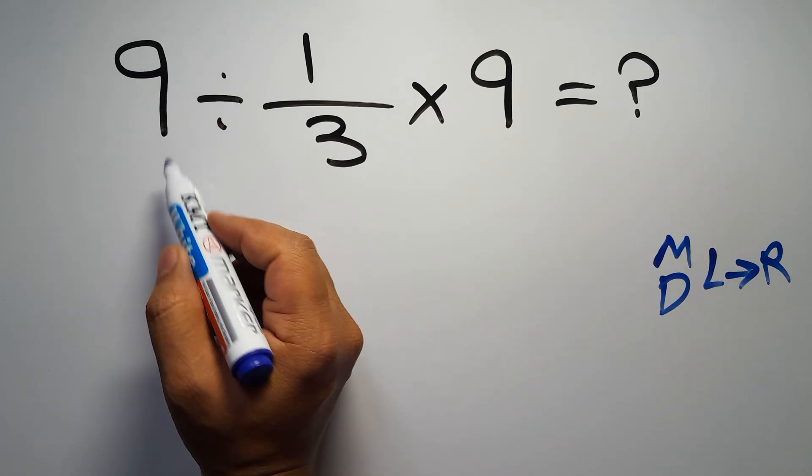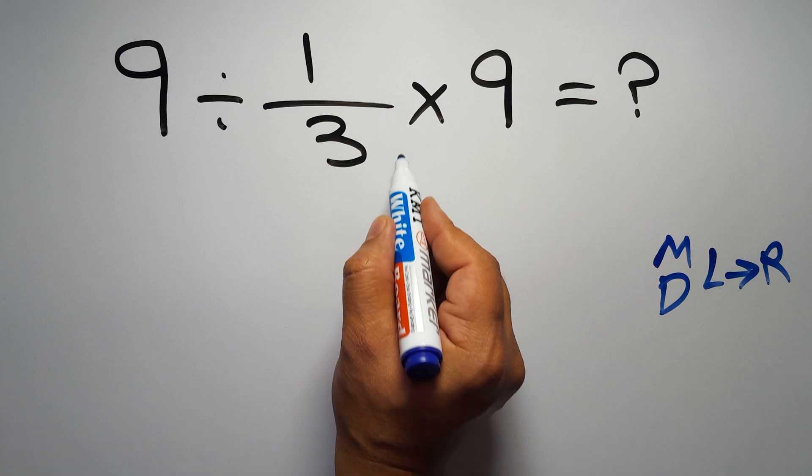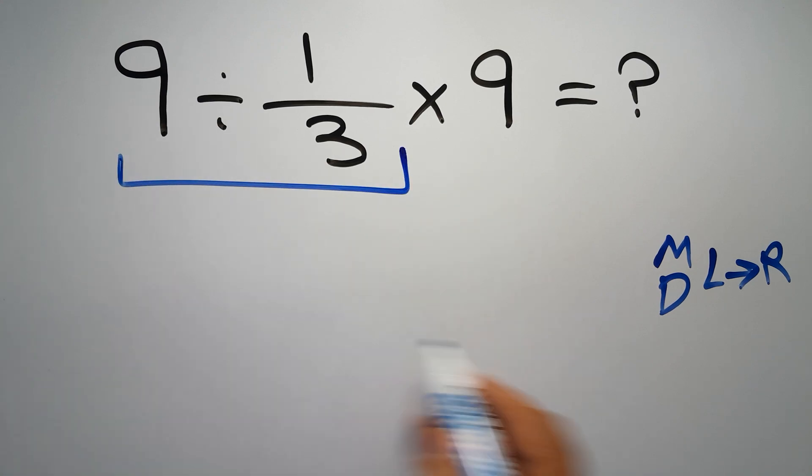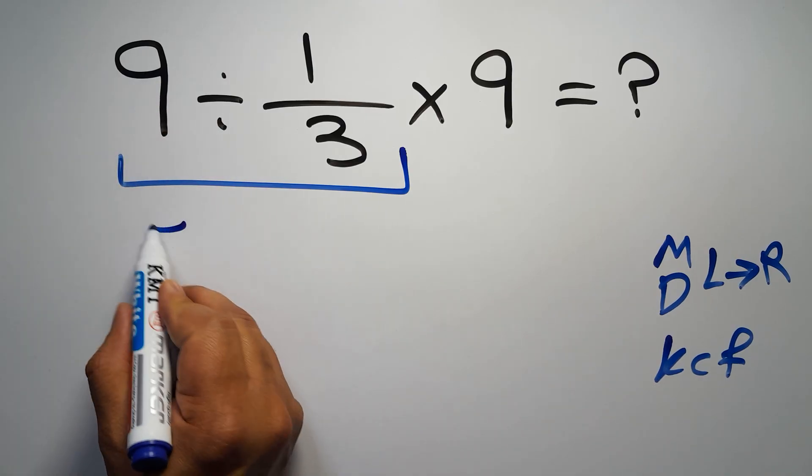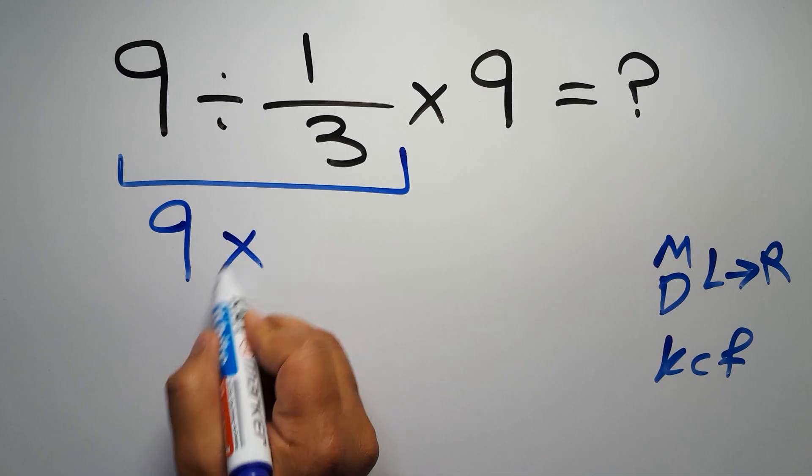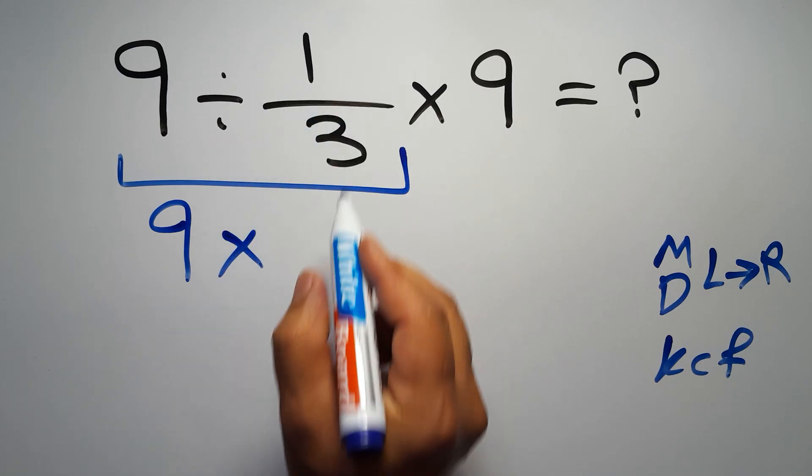So first this division. 9 divided by 1 over 3. According to the KCF rule, K stands for keep, C stands for change, and F stands for flip. We can write, keep the first fraction, change division to multiplication, and flip the second fraction.